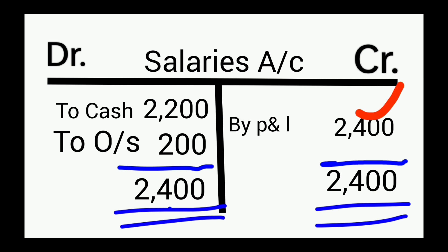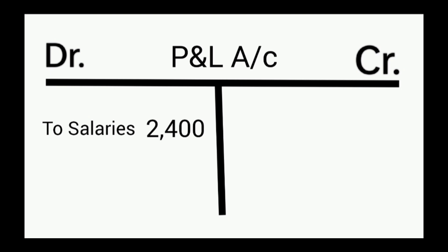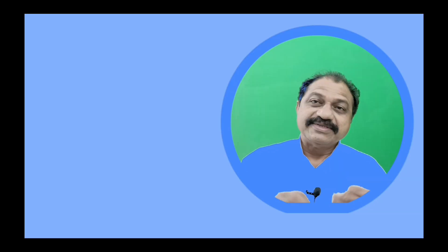The total salaries of rupees 2,400 have been transferred to the profit and loss account — that is, by Profit and Loss Account 2,400. This 2,400 will appear at the debit side of the profit and loss account: 'To Salaries 2,400.' This 2,400 debited in the profit and loss account includes salary paid in cash 2,200 plus outstanding salaries 200.